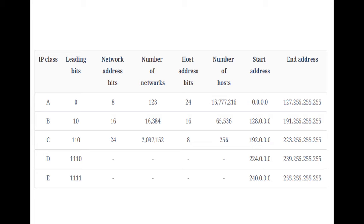In the case of Class C, 2,90,152 blocks are used. Some 256 blocks are used for private addressing, leaving 2,96,896 blocks assigned to organizations. For small organizations we use Class C, and for larger organizations we use Class B. Based on the usage needed, the classes are designed and assigned by the NIC.